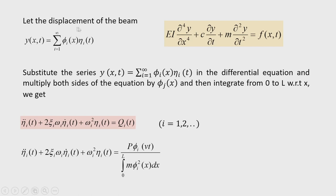The mode superposition technique takes the displacement of the beam as a function of x and t, given by the summation from i = 1 to infinity of φᵢ(x)·ηᵢ(t), where ηᵢ(t) is the generalized coordinate in the i-th mode. In practical computation, the infinite series must be truncated to a finite number of terms. Here y(x,t) = Σ φᵢ(x)·ηᵢ(t), where ηᵢ(t) is the generalized coordinate in the i-th mode.